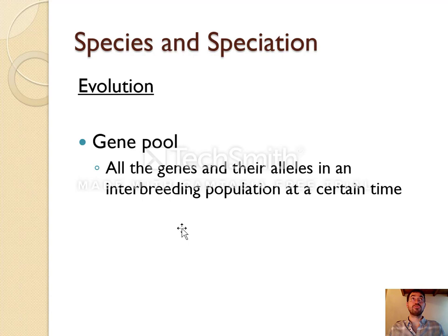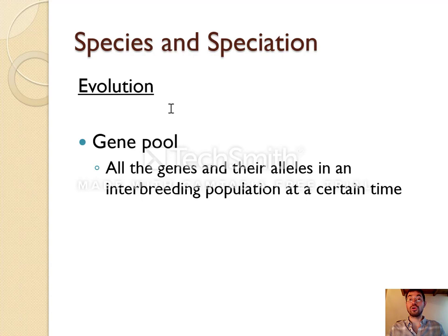Now, humans are a bad example because everybody on earth can potentially mate with somebody in another country. Whereas if you're talking about an animal like deer, deer in France will not be mating with deer in America — they don't take planes and fly across for university studies. So they are separate populations, each of which has a separate gene pool. The kids in each population would have access to all the genes in their local gene pool, but not in the other one.